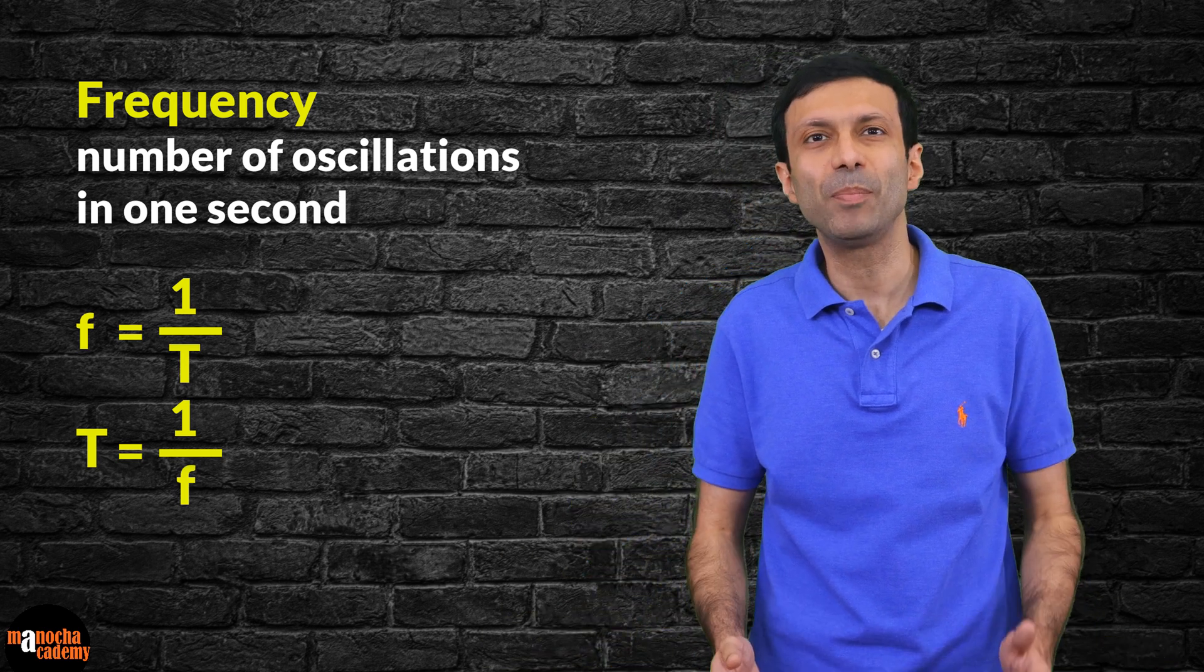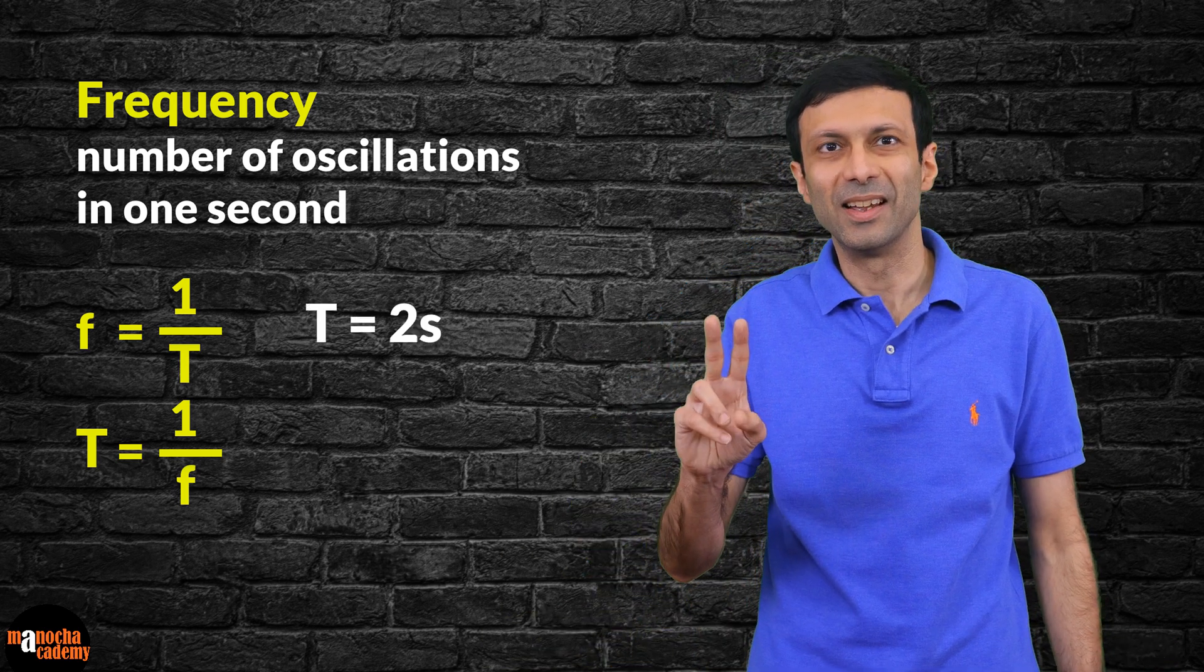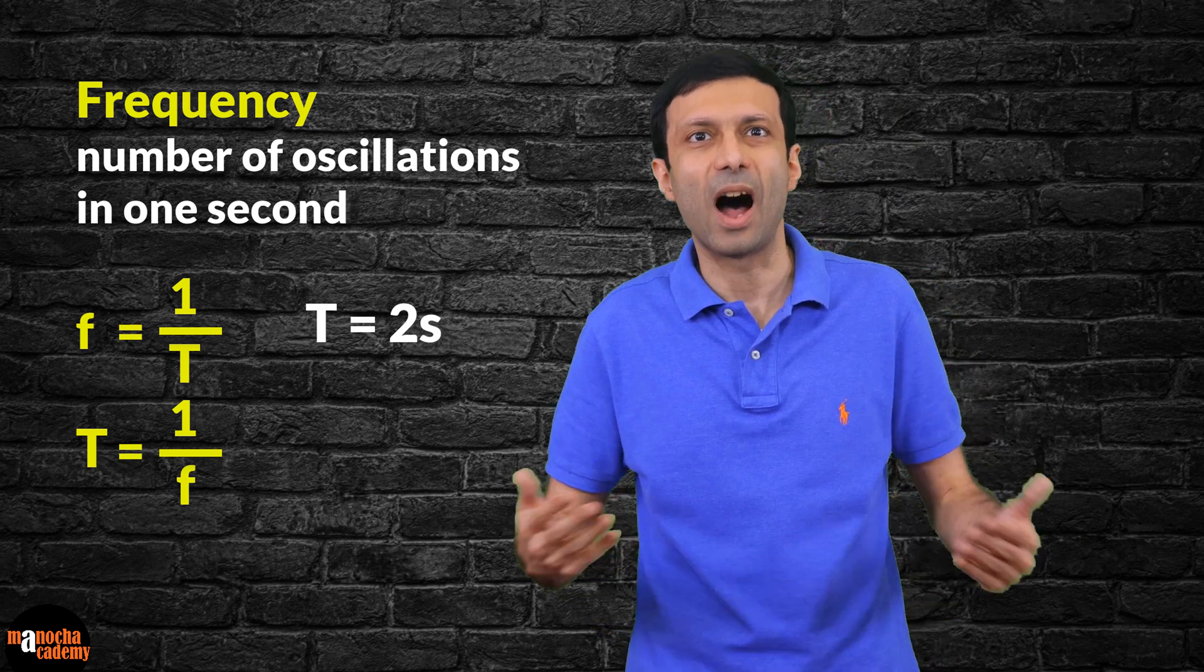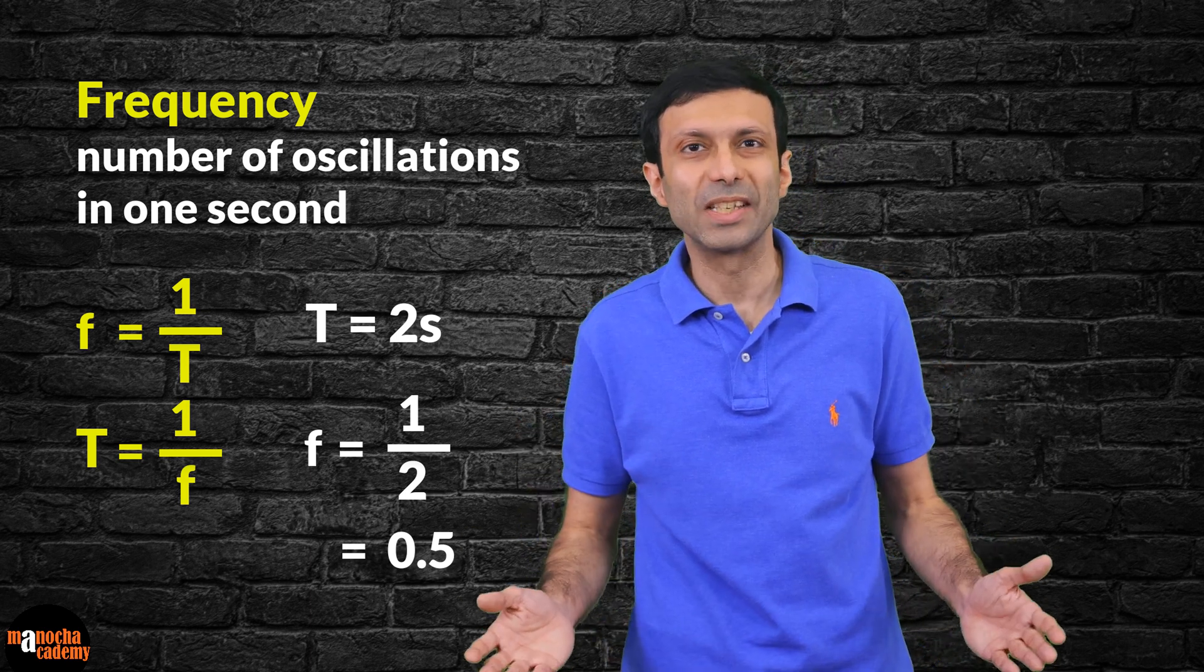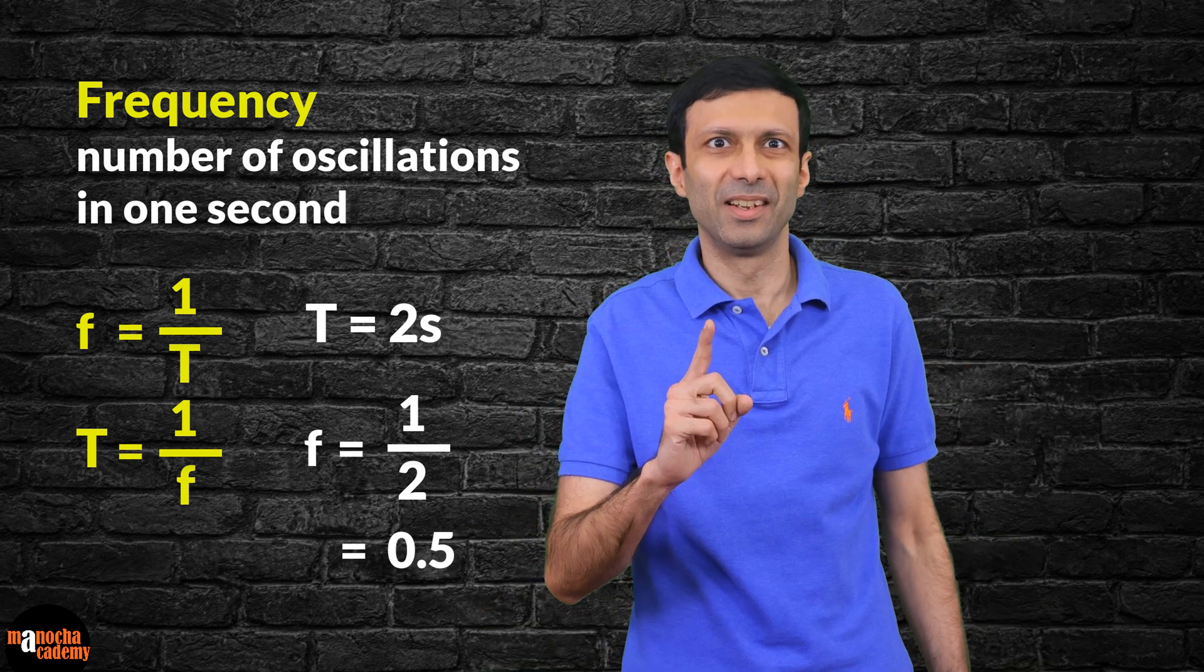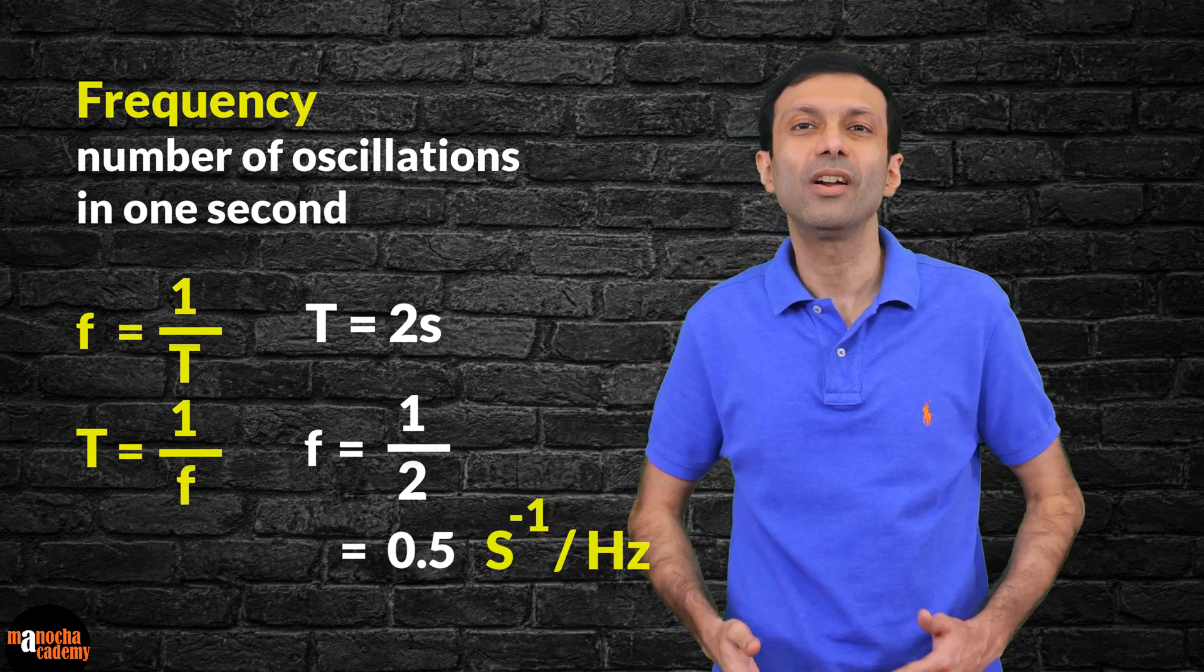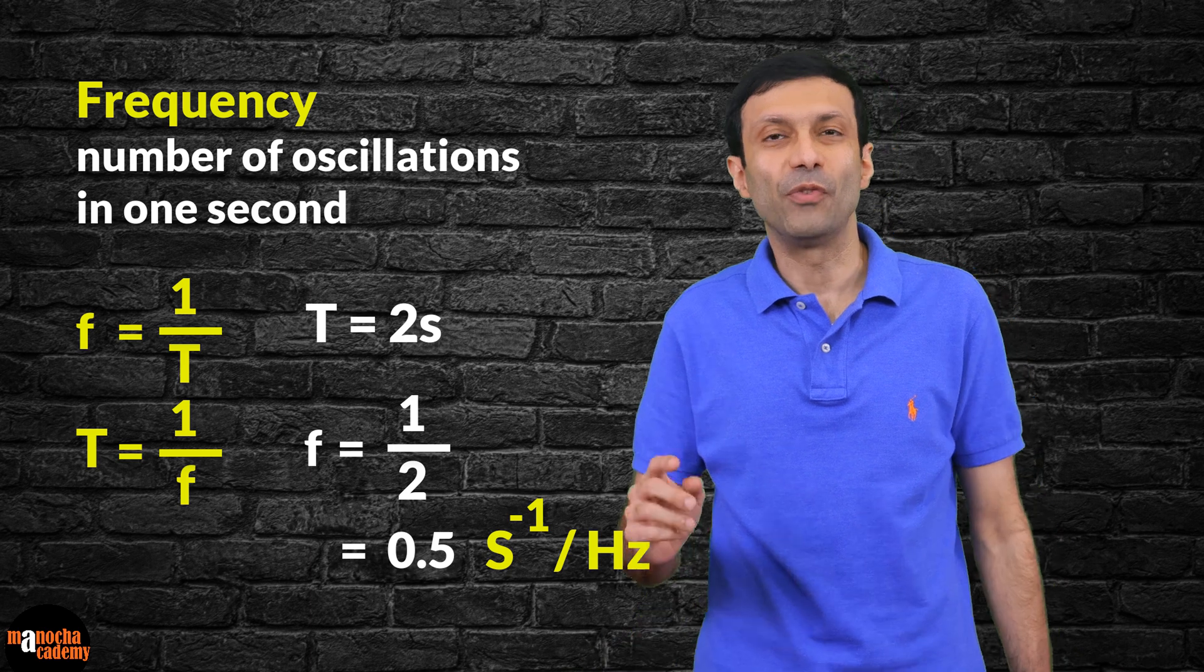Now, what is the frequency for a pendulum where the time period was 2 seconds? That's right, if you take the reciprocal, the answer is going to be half or 0.5, because it is completing half an oscillation in one second. The unit of frequency is second inverse or hertz, so the frequency of our pendulum is written as half hertz or 0.5 hertz.